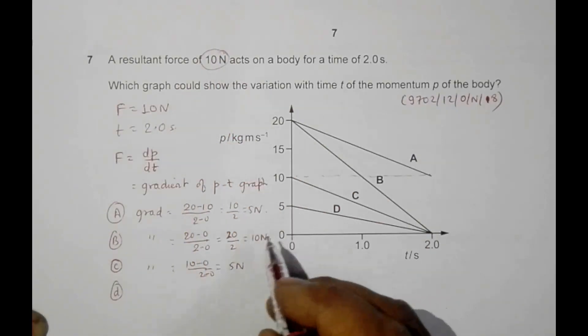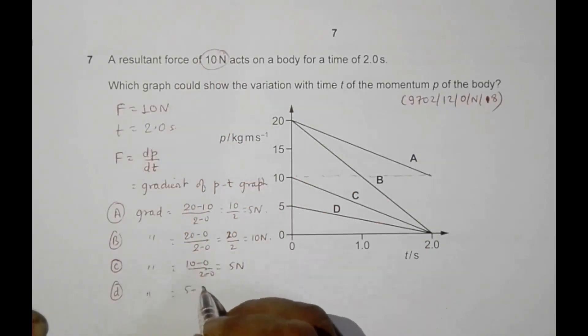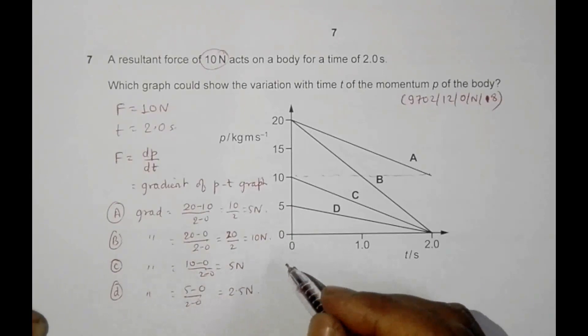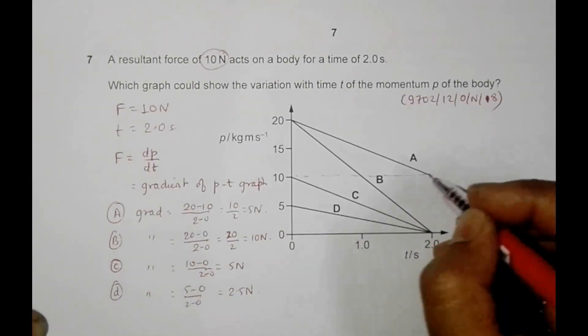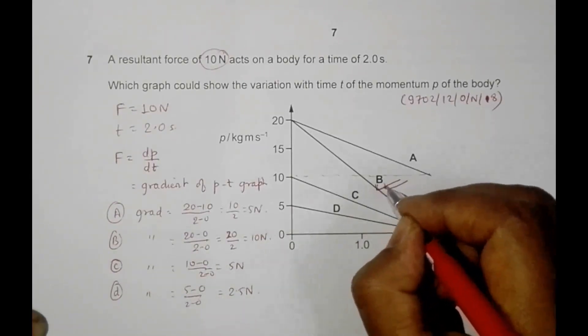And again in choice number D we have 5, so this is equal to 5 minus 0 by 2 minus 0. It's equal to 2.5 Newton. So going through all these choices, it is certain that choice number B is the correct answer.